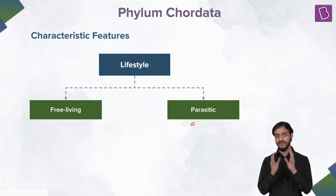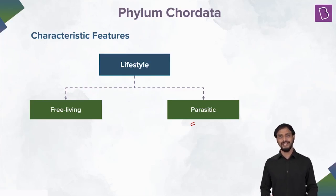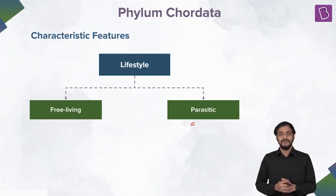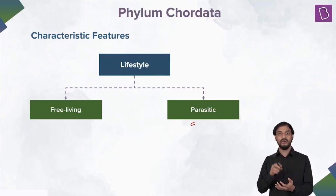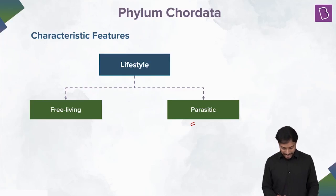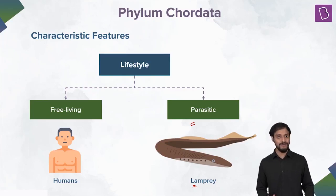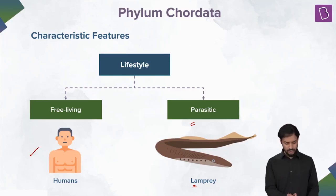Yes, there are some animals which are truly parasitic — an example is the lamprey. We human beings are free-living animals, while lampreys are parasitic. In today's session we are going to talk extensively about lampreys. The general mode of nutrition for all animals is heterotrophic. Lampreys are parasitic fishes native to the northern and western Atlantic Ocean.